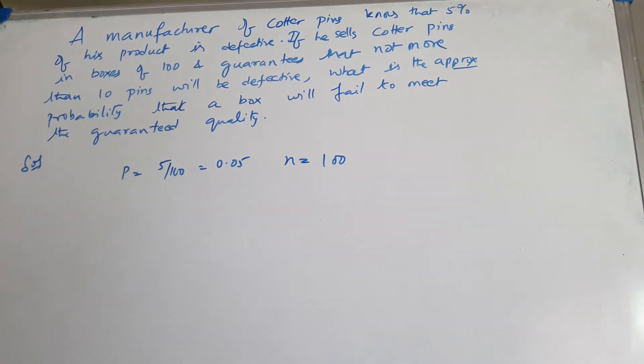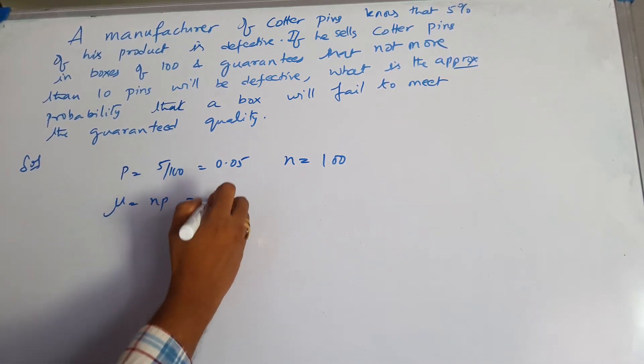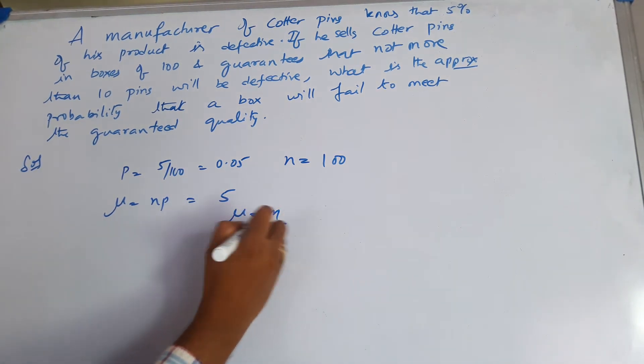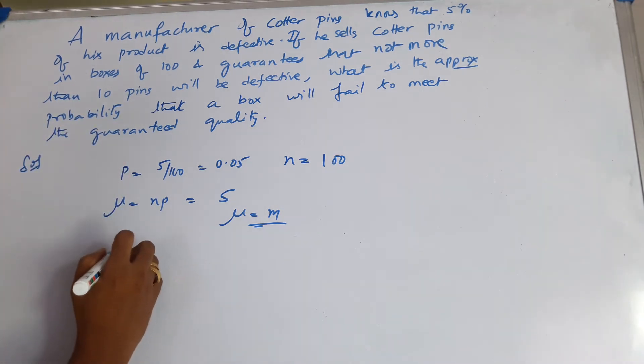That is 100 boxes. So mu equals NP, which equals 5. Mu equals M. Since the probability is so small, let us consider Poisson's distribution.